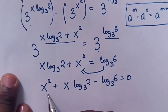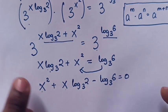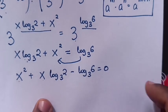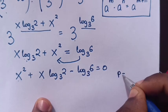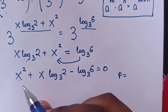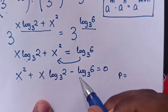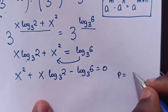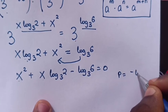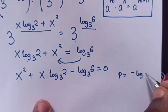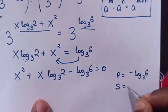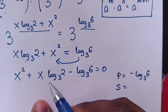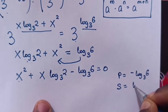Then this will be x squared plus x log of 2 base 3 minus log of 6 base 3 is equals to 0. Now this is a quadratic equation. To find the value of x by factorization, the product here is 1 times negative log 6 base 3, so it is negative log 6 base 3. And the sum here is log 2 base 3.